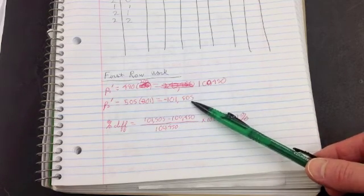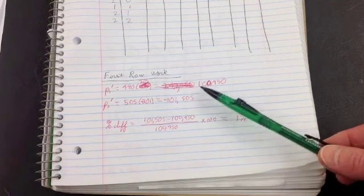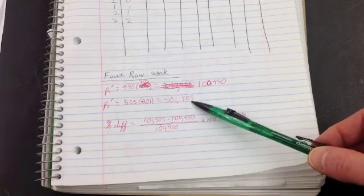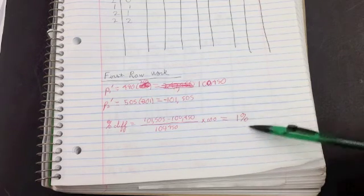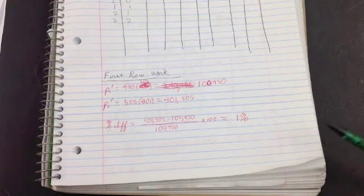I found the percentage difference of the absolute value. Obviously, if I subtracted this, I'd get a huge difference between these. But the absolute value of this is supposed to be the same as the absolute value of this. So in my made-up example, I got 1%.